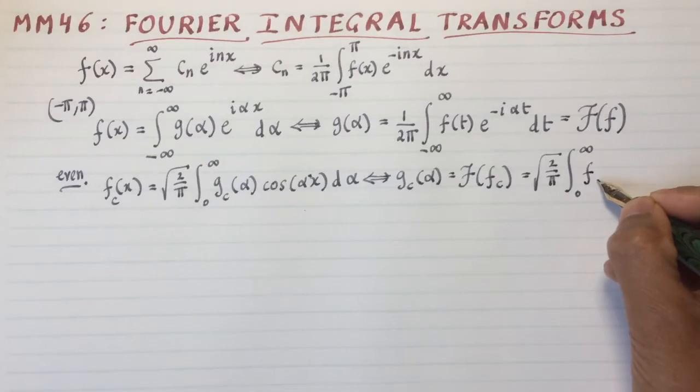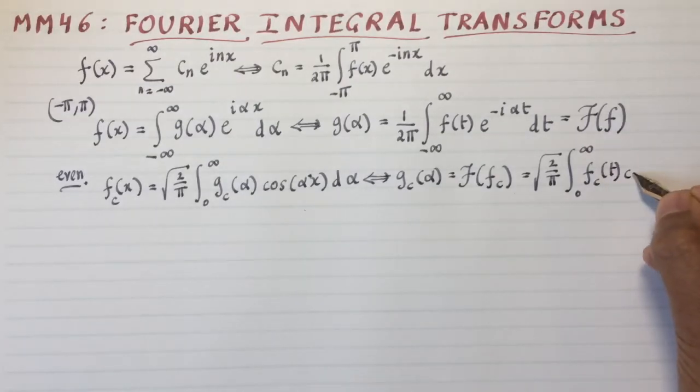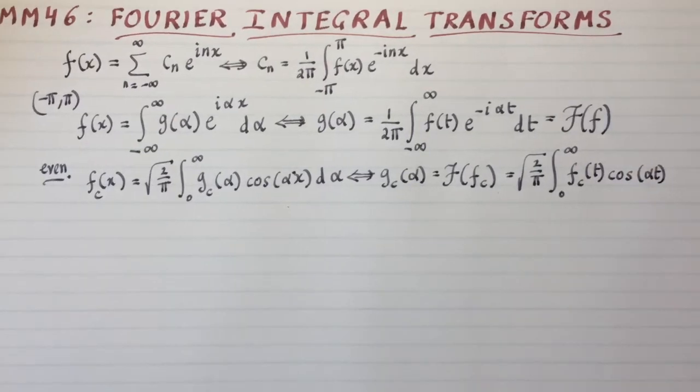Notice that you just go from 0 to infinity now. You don't need to go from the entire negative infinity to positive infinity because you've chosen the Fourier extension, the odd extension or the even extension.